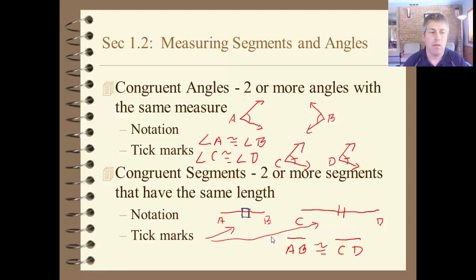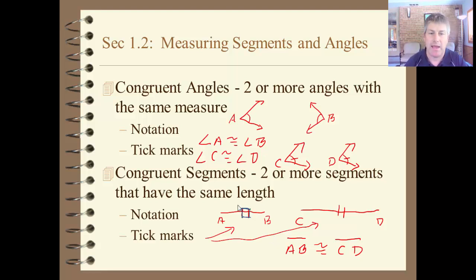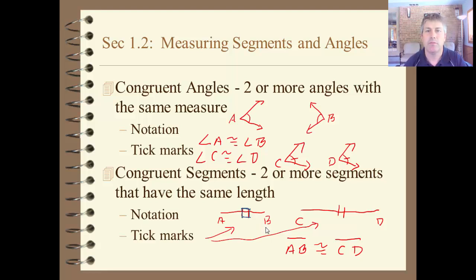That wraps up this video. We've done a little introduction to classifying angles by size — we have acute angles, right angles, obtuse angles, and straight angles. We've talked about congruency: things having the same size and the same shape. We've talked about notation for congruent segments and congruent angles, and about tick marks — if you have the same tick marks, then you know those angles or segments are congruent. We'll see you in class.